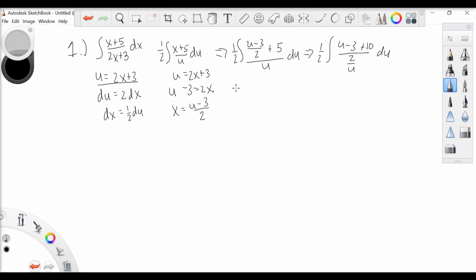Now one step further, clear out this fraction, so we now have u plus 7 over 2u. And don't forget our integral and our one-half.